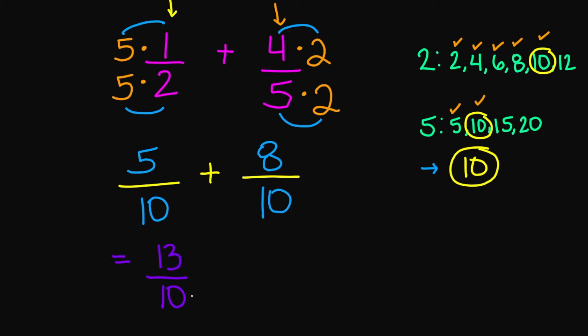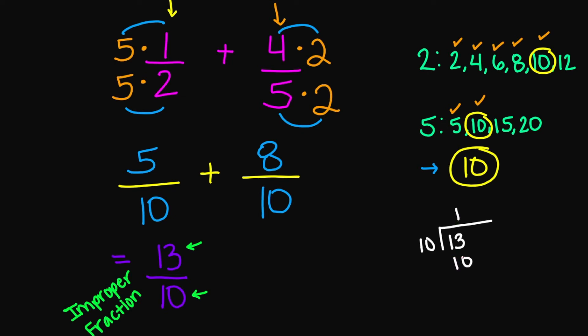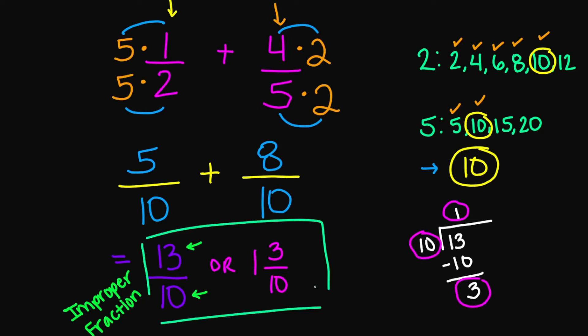However, this is an example of an improper fraction, so we're going to simplify this. Your numerator is bigger than your denominator, so that makes it an improper fraction. I'm going to divide: 10 goes into 13 one time. 10 times 1 is 10. 13 minus 10 is going to give me a 3. So your final answer is 13 over 10, or because we're simplifying, that's going to be 1 and 3 tenths — 1 because that's my quotient, and then 3 from my remainder over 10 from my divisor.